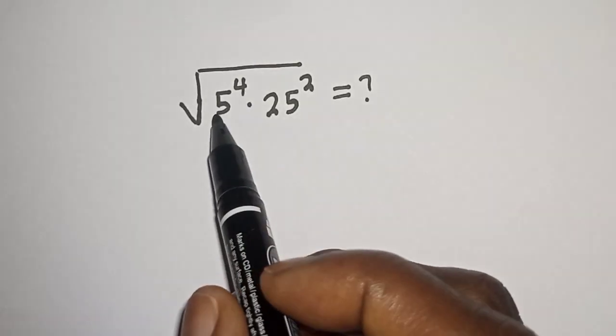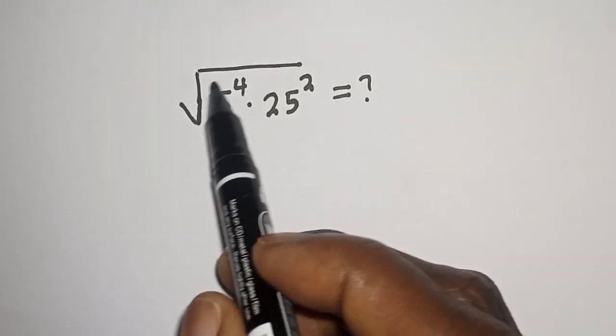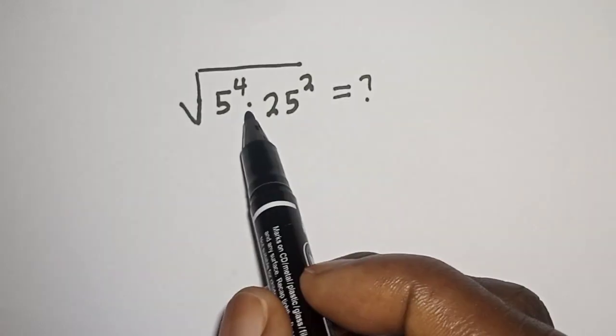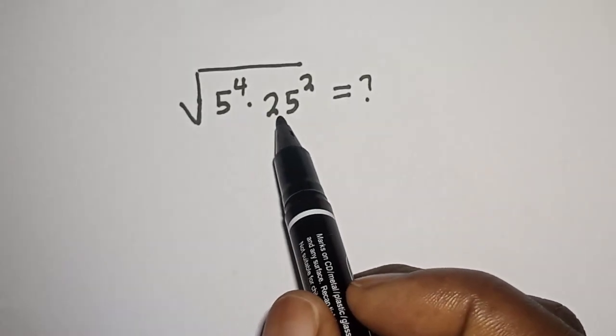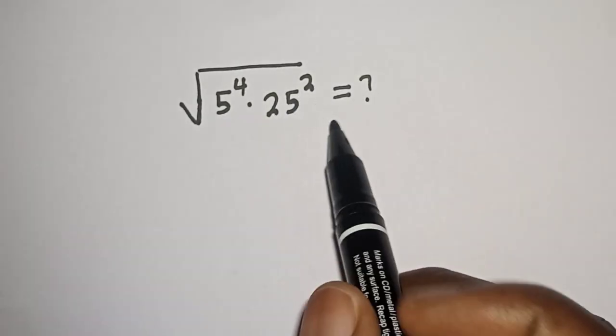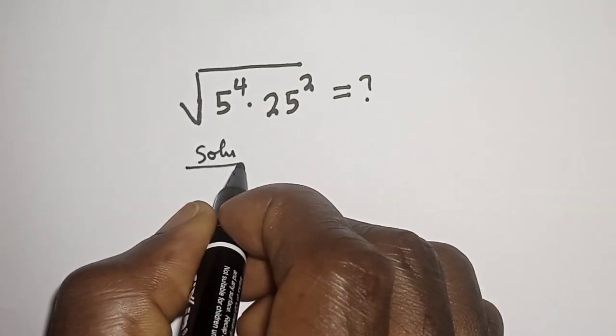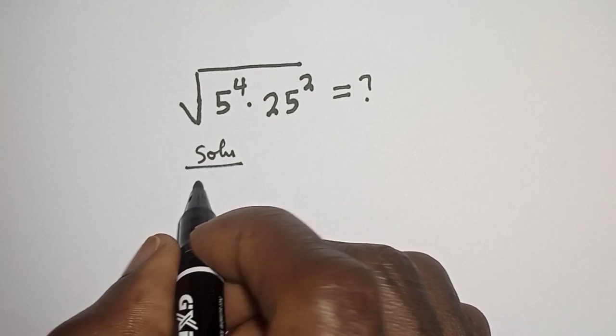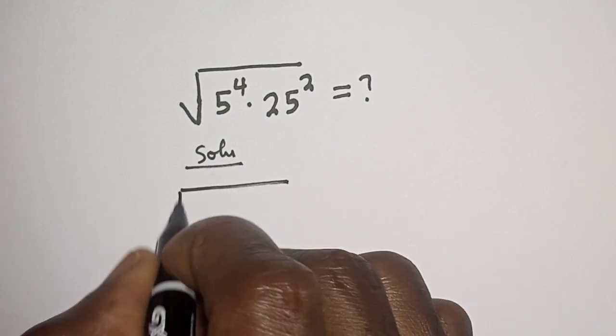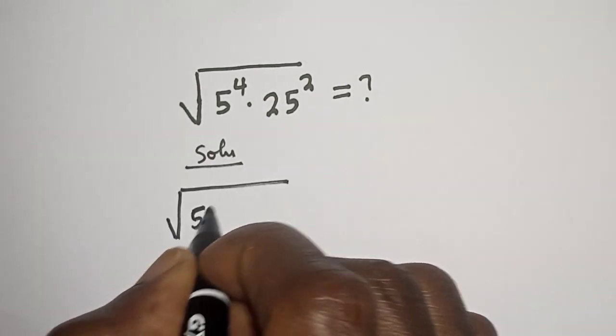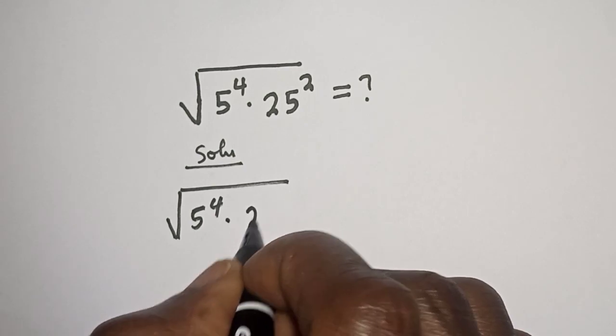Hello, welcome to Magis. How to simplify this square root of 5 raised to power 4 multiplied by 25 square? Solution. We have the given question square root of 5 raised to power 4 multiplied by 25 square.